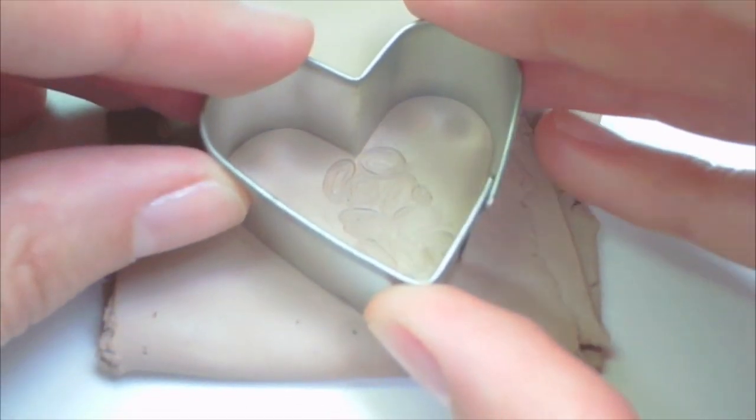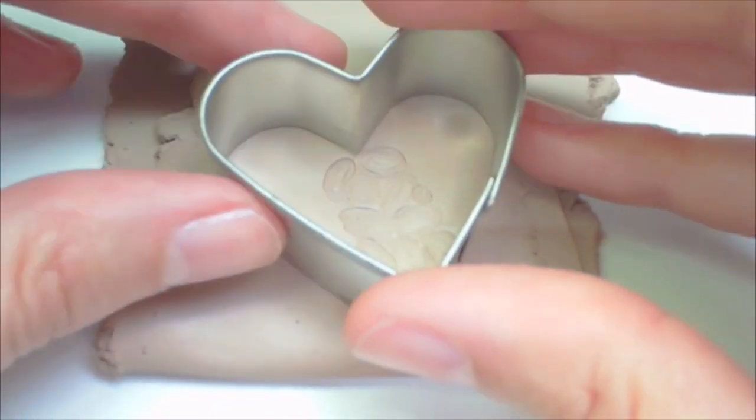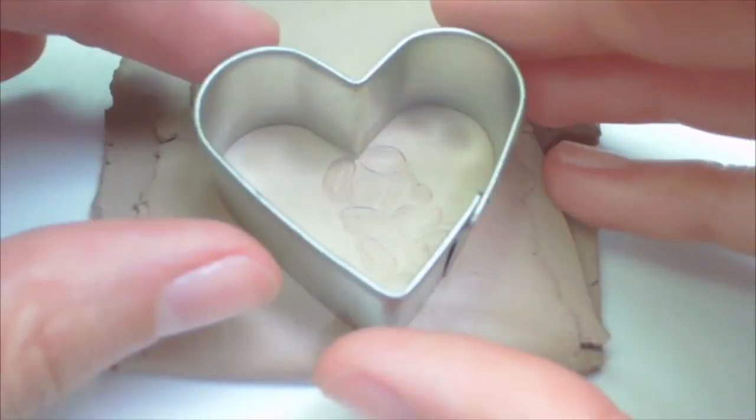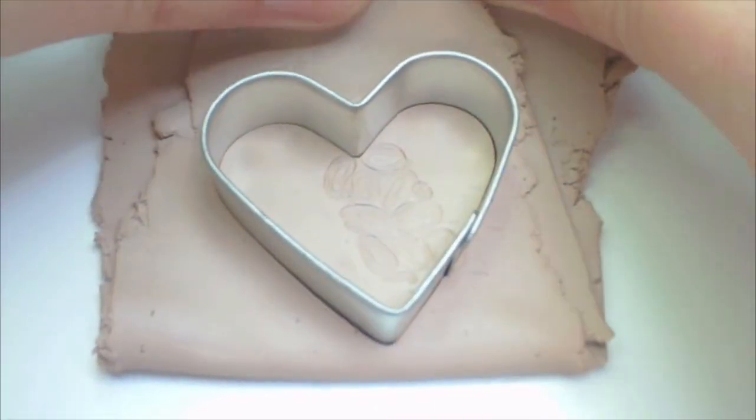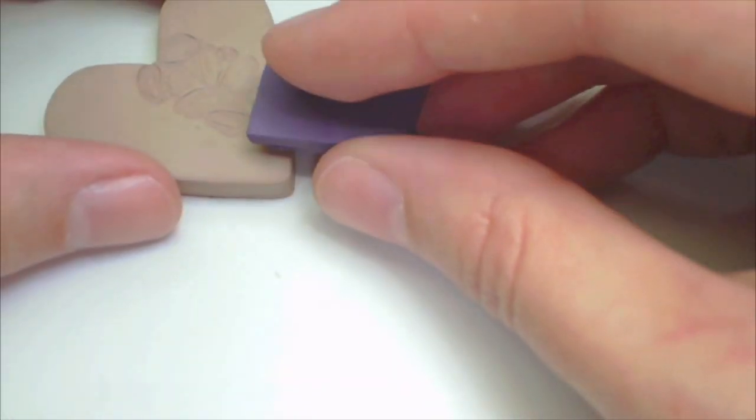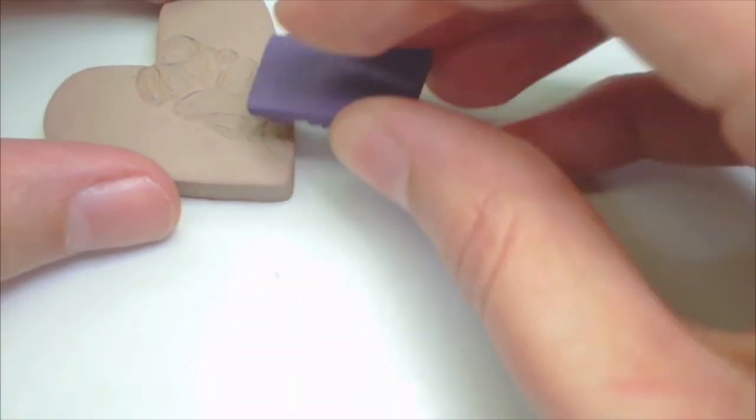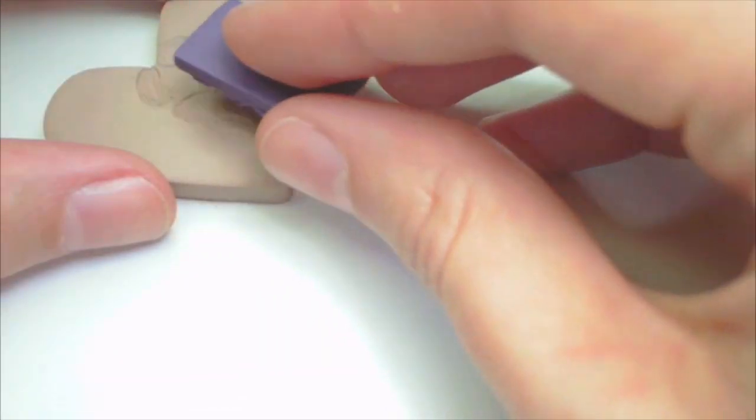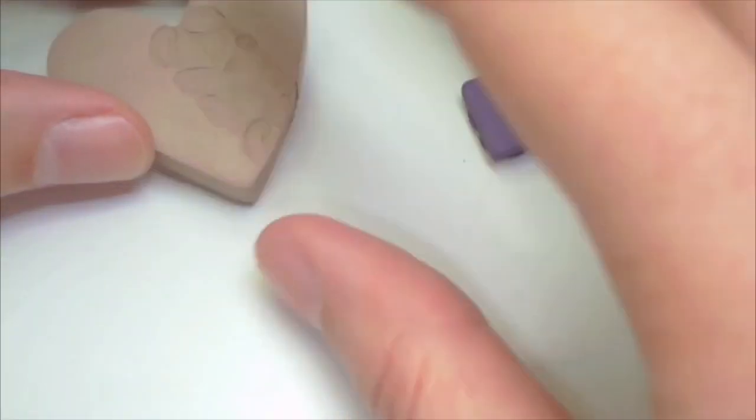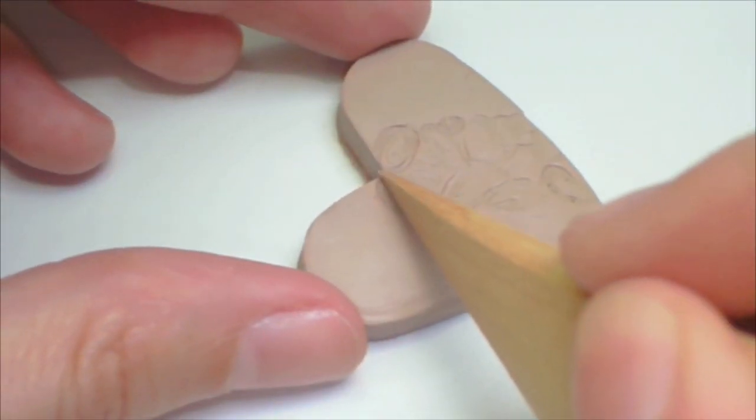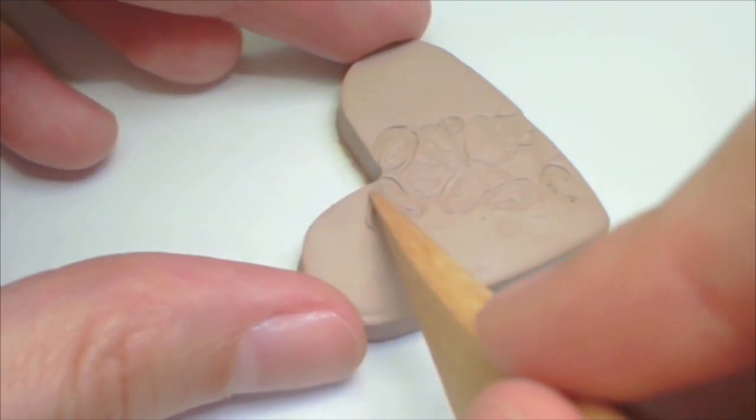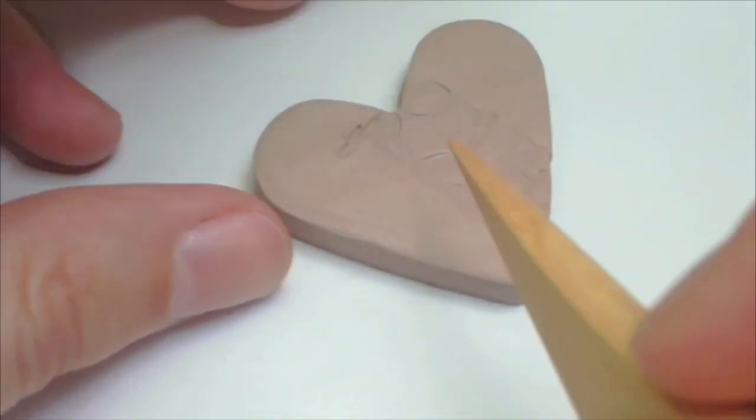Decide where you want the swirl section to be. Then cut out the shape with the cookie cutter. There is an empty spot at the bottom so I added a little bit of extra texture. Now use a tool with a straight edge to start dividing the different pattern sections.